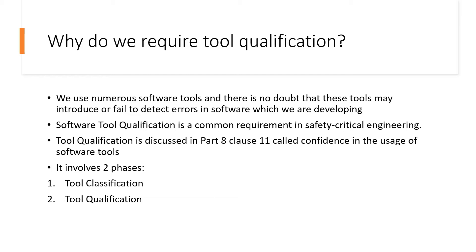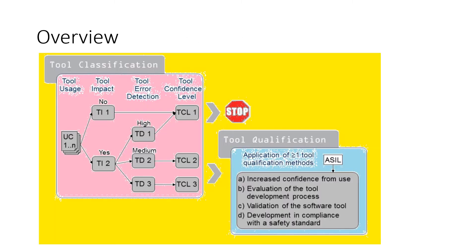This entire clause can be categorized into two different phases: the first is tool classification or tool planning, and the second is tool qualification. The overview involves two phases — tool classification as the first part and tool qualification as the second part.